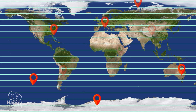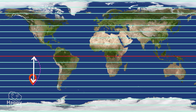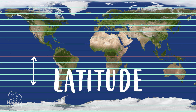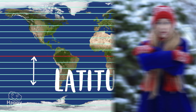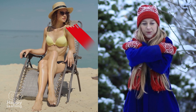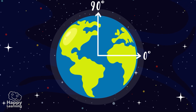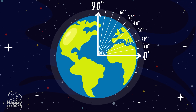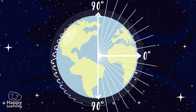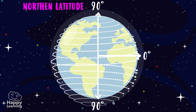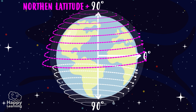The distance from any point on the planet to the parallel of the equator is called latitude, and it's measured in degrees — but not in degrees relating to hot or cold, but in degrees of distance, which go from 0 to 90 degrees on a scale that goes up in tens.